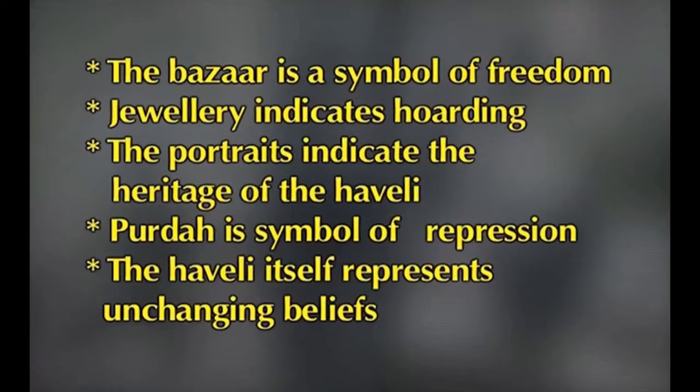The merits and demerits of the joint family system are also elucidated in the novel. The bazaar is a symbol of freedom, while jewelry indicates hoarding. The portraits indicate the heritage of the Haveli, Parda is a symbol of repression, while the Haveli itself represents unchanging beliefs. The novel is relevant in the current age due to various reasons. In the previous lesson we looked at the summary of the novel along with the character sketches of various people in the novel.